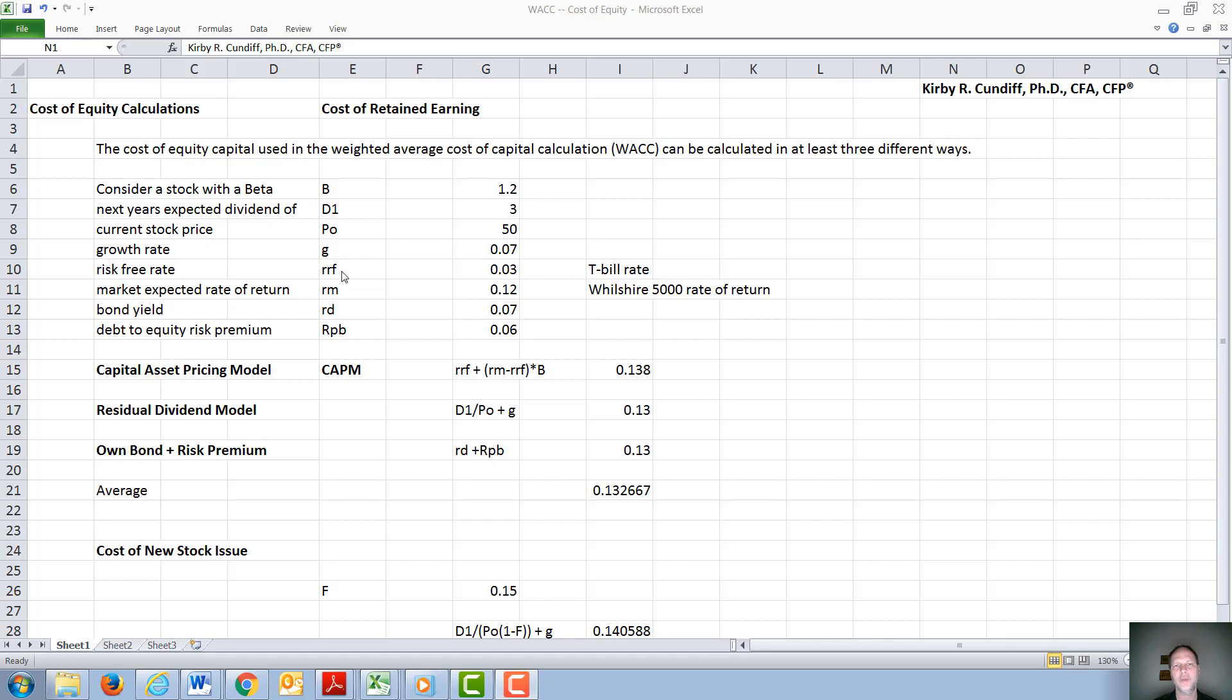The risk-free rate, RRF, is 3%, which could be a proxy of the U.S. government T-bill. Market expected rate of return, RM, of 12%, an example of that could be the Wilshire 5000 or the S&P 500. Consider the company's bond yield to be 7%, and for the average company, we will assume that the equity yield is 6% above the debt yield.